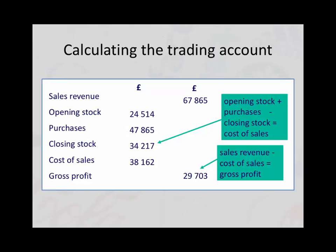The trading account in the income statement is laid out using two columns. The first column contains all the information on your cost of sales, and the second column all the information on the actual sales of toy trains to your customers. In this particular toy train example, we have sold the toy trains for sixty-seven thousand eight hundred and sixty-five pounds.